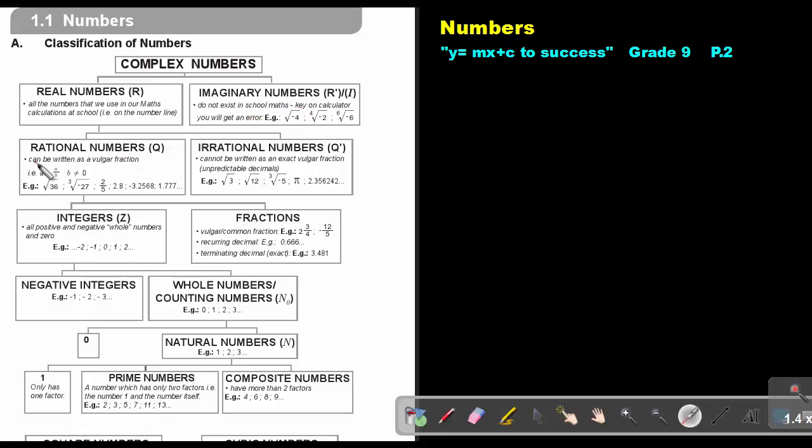Rational numbers can be written as vulgar fractions, something on top, something at the bottom. But just remember, the value of B cannot be zero. Examples include the square root of 36, which is 6. You can get a negative cube root, so that will give you negative 3. And all recurring decimals can also be written as a vulgar fraction.